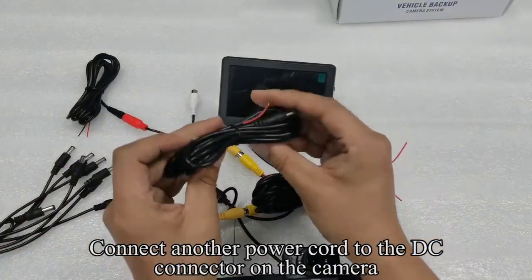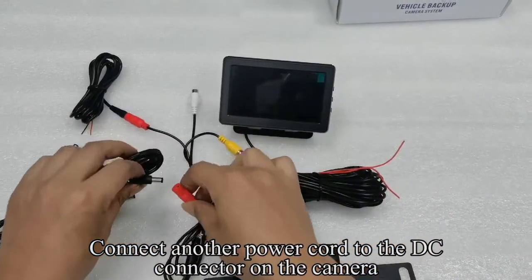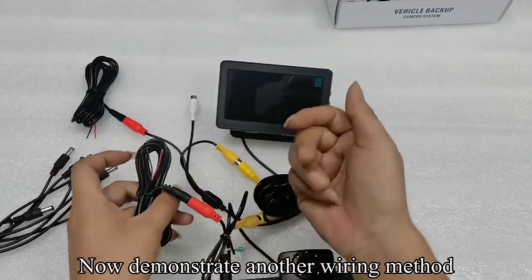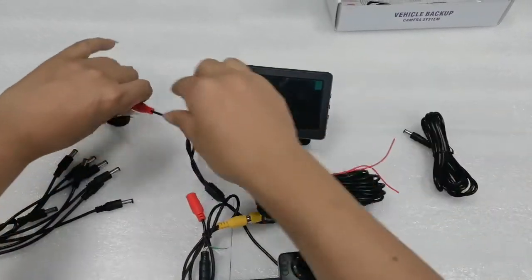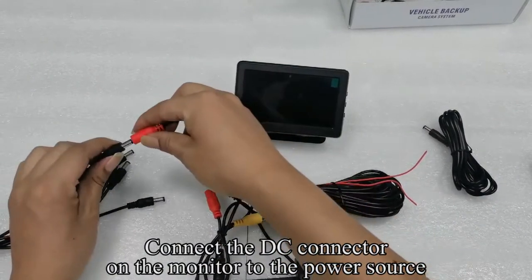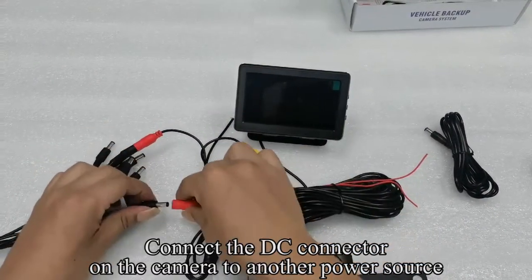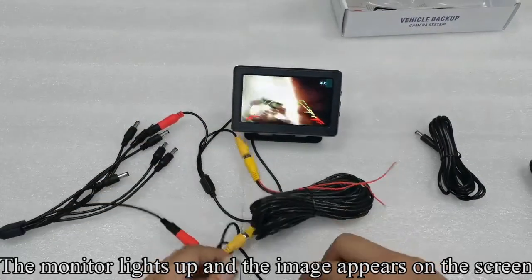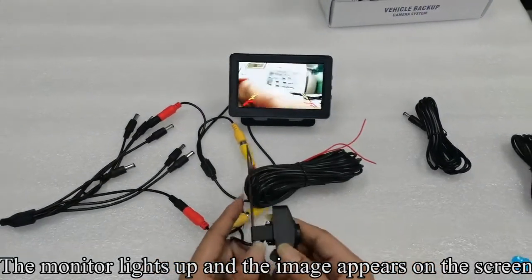Connect another power cord to the DC connector on the camera. Now demonstrate another wiring method. Connect the DC connector on the monitor to the power source. Connect the DC connector on the camera to another power source. The monitor lights up and the image appears on the screen.